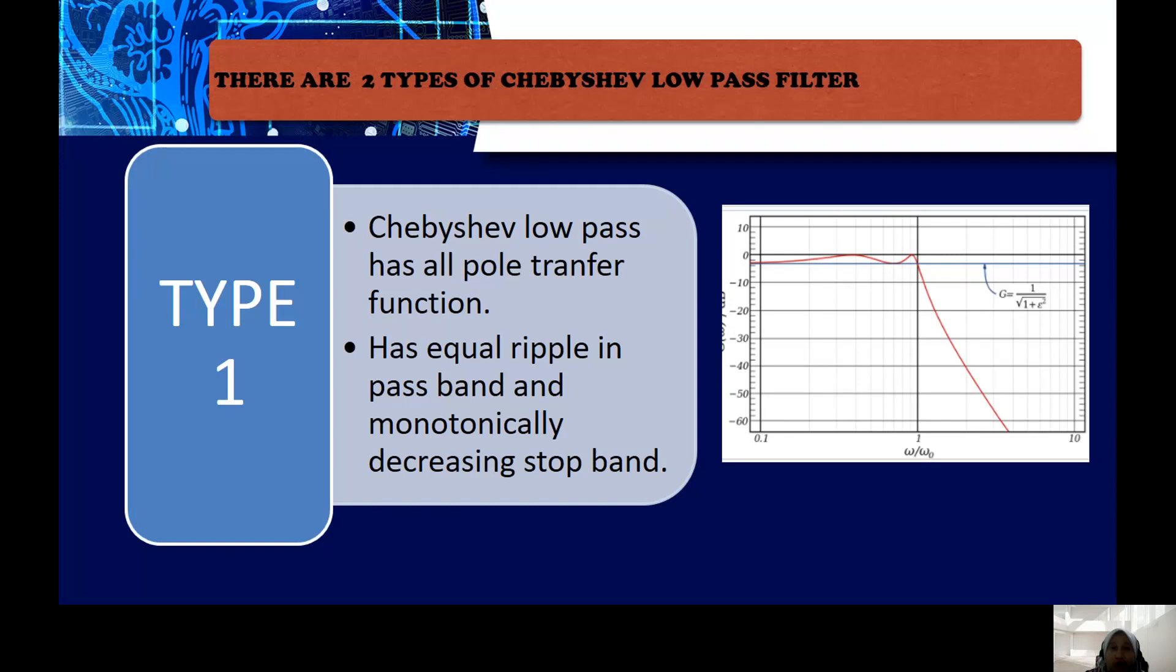There are two types of Chebyshev Low-Pass Filter, which in this research we are using type one, which has all pole transfer function. As you can see in the figure, the equal ripple has equal ripple in the pass band and ripple monotonically decreasing at the stop band area.